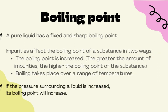For a liquid, pure liquids have a fixed and sharp boiling point. When impurities are present, the boiling point is increased — for example, water boils at 100°C, but seawater may boil at 102°C — and boiling takes place over a range of temperatures rather than at a fixed point. Also note that if the pressure surrounding the liquid is increased, the boiling point will also increase.